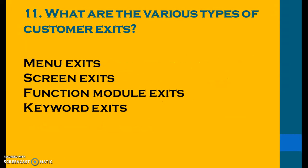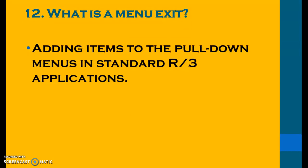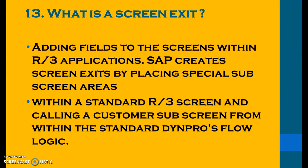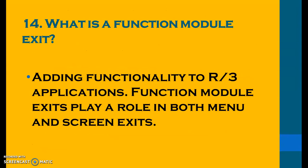What are the various types of customer exits? They are: menu exits, screen exits, function module exits, and keyword exits. What is a menu exit? Adding items to pull-down menus in standard SAP R3 applications. What is a screen exit? Adding fields to screens within R3 applications — SAP creates screen exits by placing special subscreen areas within a standard R3 screen and calling a customer subscreen from within the SAP standard dynpro flow logic. Function module exits play a role in both menu exits and screen exits.